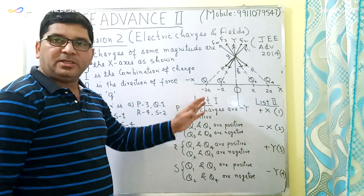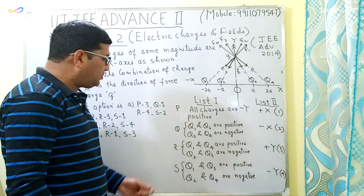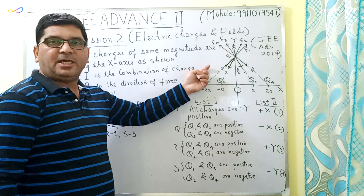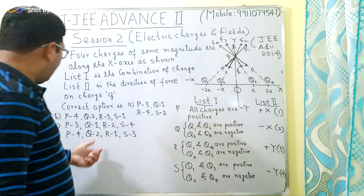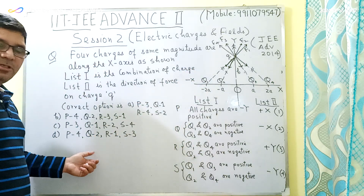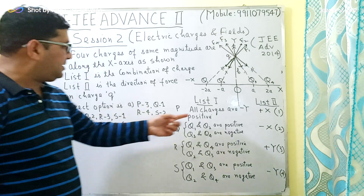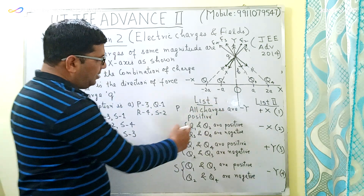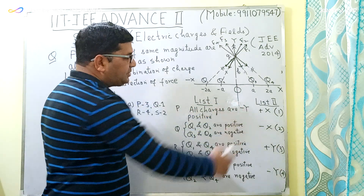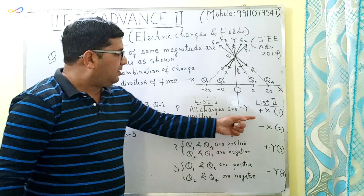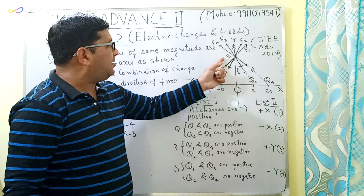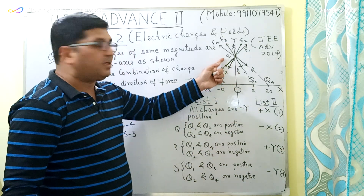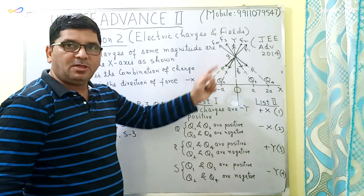Here we have no calculations. Just with the help of this diagram we will be able to find the correct option. There is a list which consists of combinations of charges, and this list gives you the direction of the resultant force on the charge Q.